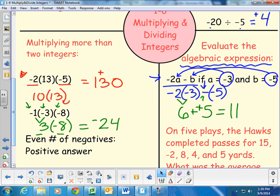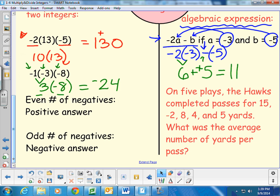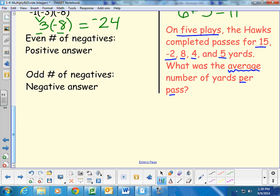Okay. And there are some in your book to give more of those a try if you'd like. Okay. And now there's a word problem. On 5 plays, the Hawks completed passes for 15, negative 2, 8, 4, and 5 yards. What was the average number of yards per pass? So let's pull out our important information. 5 plays, a total of 5, with the amounts of 15, negative 2, 8, 4, and 5 yards. Then we're looking for what the average is per pass. So I have to go back and I have to remember that average means adding up the total and dividing by the number in this case, dividing by 5 plays. Total yards in 5 plays.